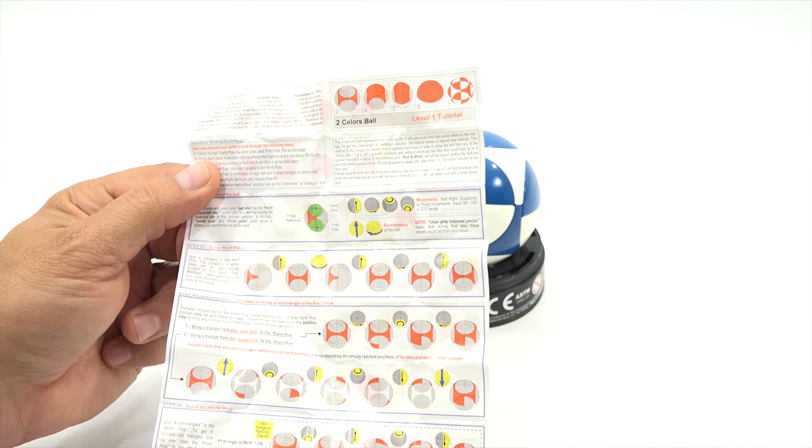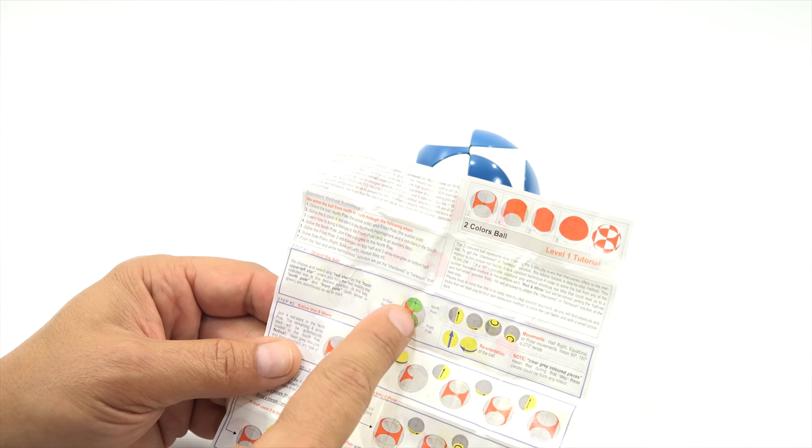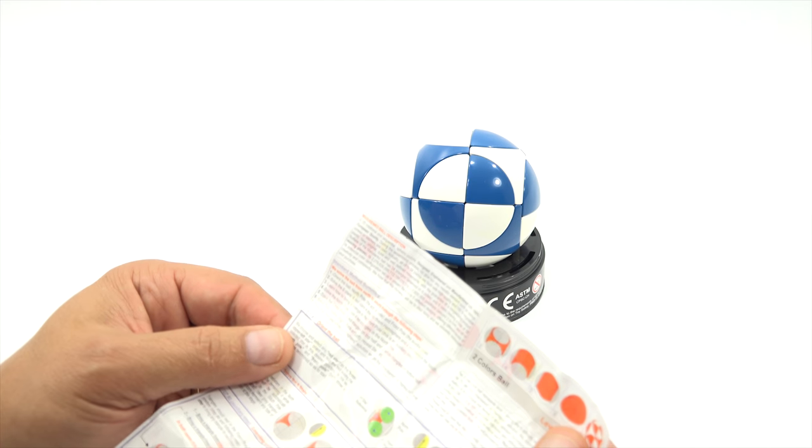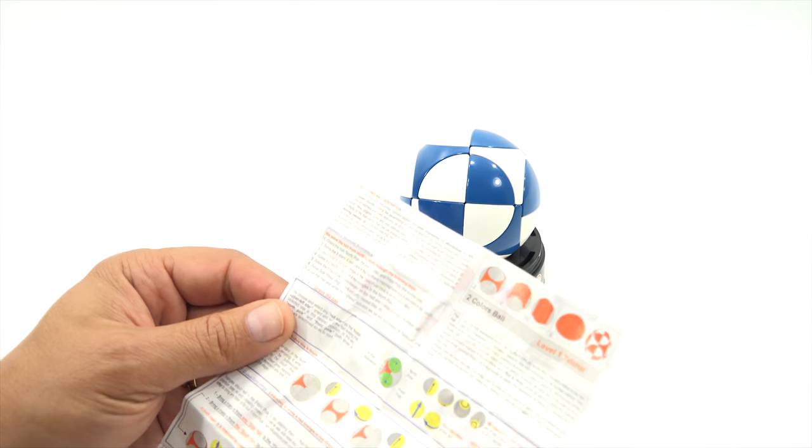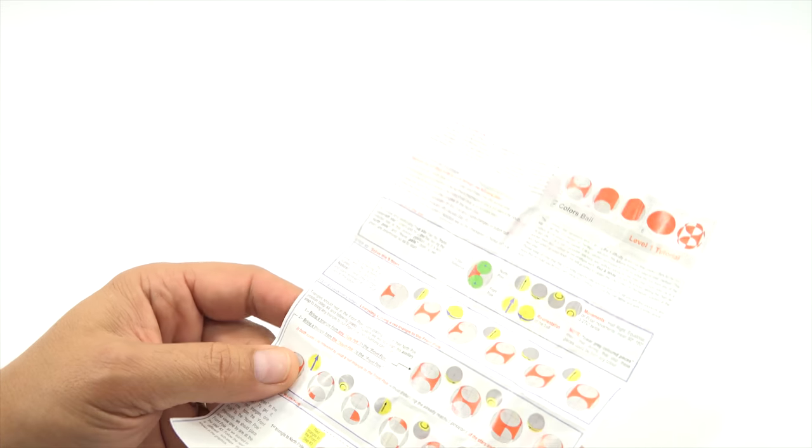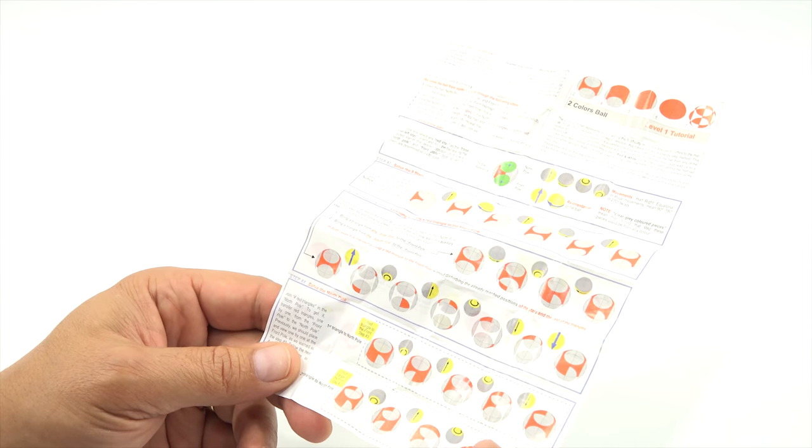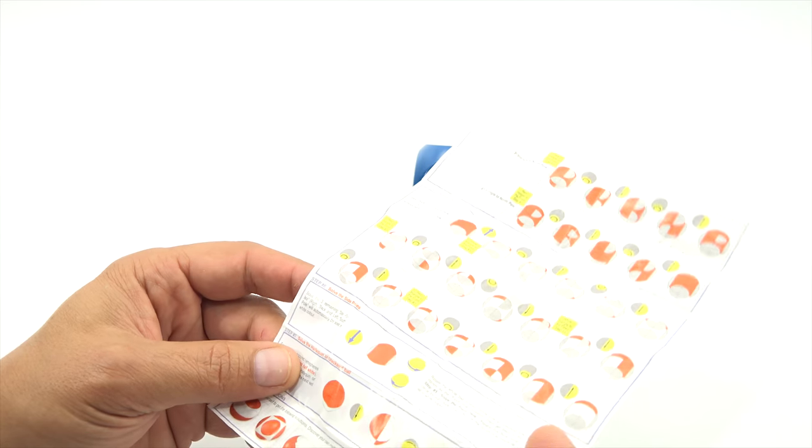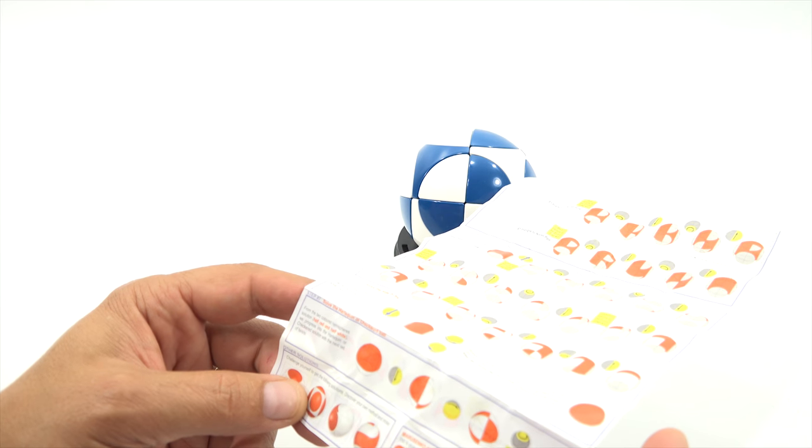Well, see, this is all confusing to me. I'd have to actually sit and solve the eight star, orient the ball like this, and then I would really need to study this. We solve the ball from north to south through the following steps. Okay, and then that takes you through step one, step two, step three, step four, step five, step six, step seven, and that gets you all the way. Twist all the poles.